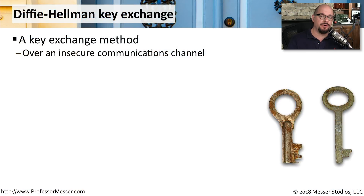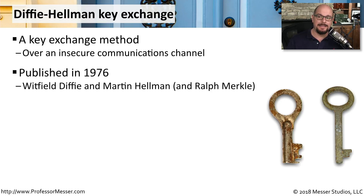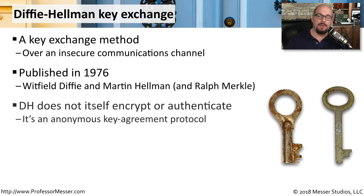One popular form of asymmetric cryptography is the Diffie-Hellman key exchange. This key exchange allows us to transfer a symmetric key between two people, but do this over an insecure communications channel. This is a method of key exchange that's been around since 1976. Diffie-Hellman key exchange is a form of asymmetric cryptography, but not a form of asymmetric encryption. This key exchange allows two devices to decide on a common symmetric key that can then be used for symmetric encryption.